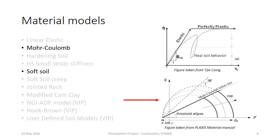The model used for the sulfide soil is the soft soil model. This model is more advanced compared to the Mohr-Coulomb model and is used for highly compressible soil. When using the soft soil model, the user can define stress-dependent stiffness that changes with depth, and the model also has the ability to simulate soil hardening and softening. One disadvantage of this advanced model is the requirement of advanced input parameters, which are often gathered from field tests.